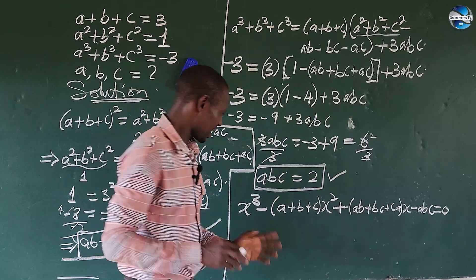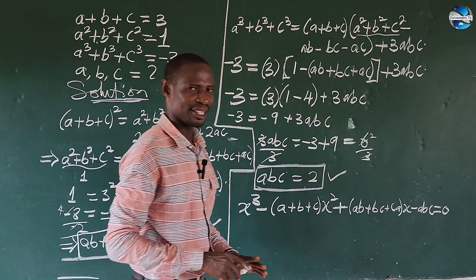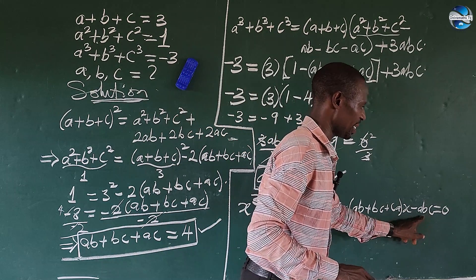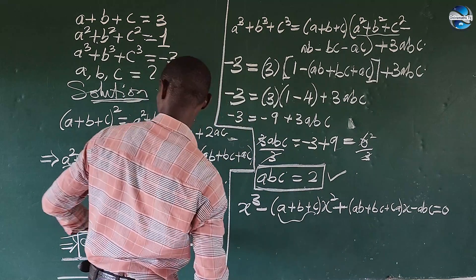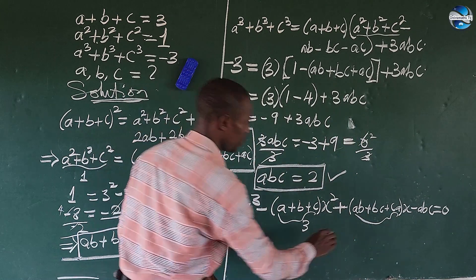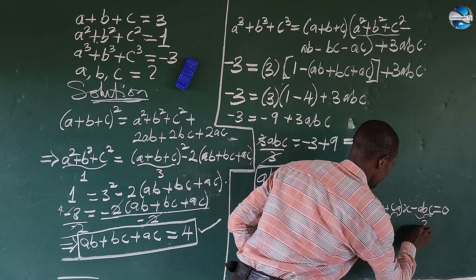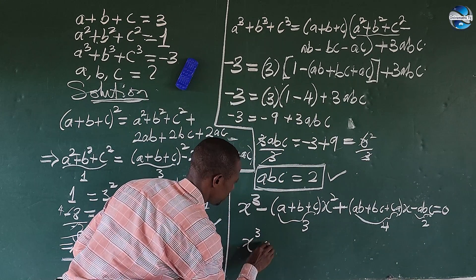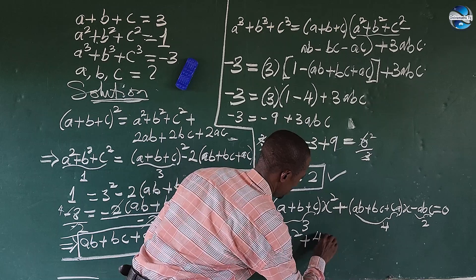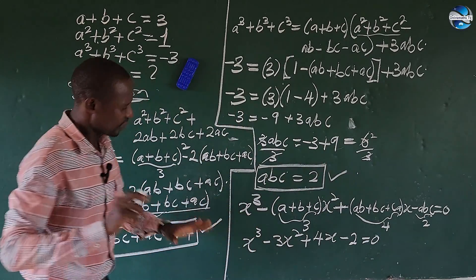So looking at this expression: we have a plus b plus c which is 3, and ab plus bc plus ca which is 4, and abc which is 2. Substituting these in, we get: x cubed minus 3x squared plus 4x minus 2 equals zero. This is our polynomial equation and we have to solve it.